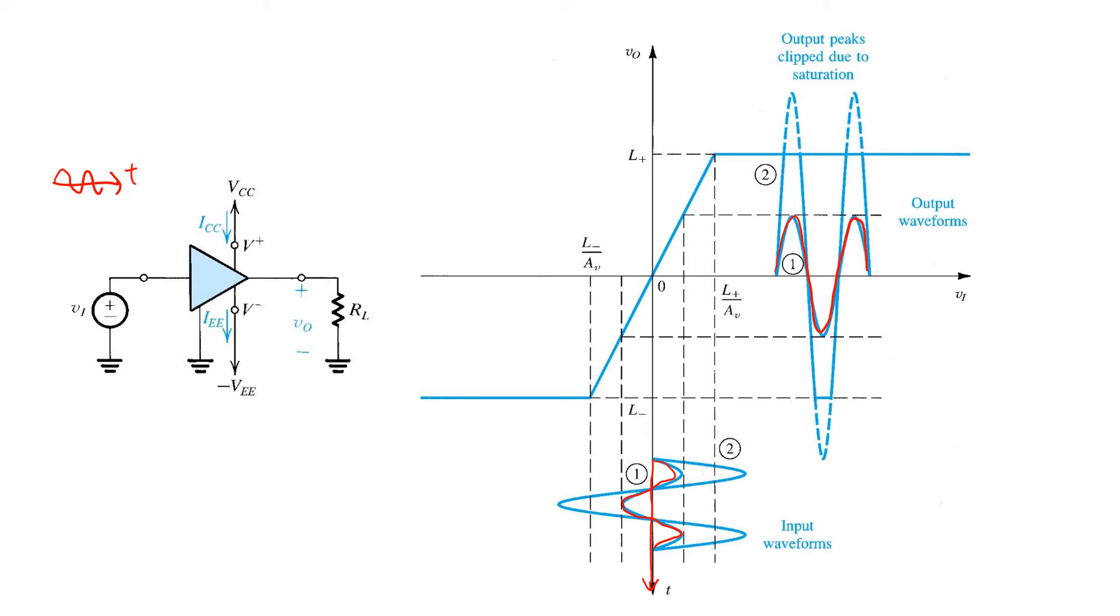On the other hand, let's consider what happens when the input voltage is a large sinusoid with an amplitude exceeding the limits we established for linear operation. That's shown here where the input sinusoid is turned on its side in plot number two.